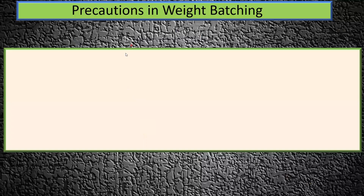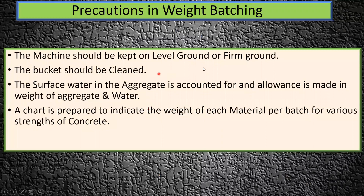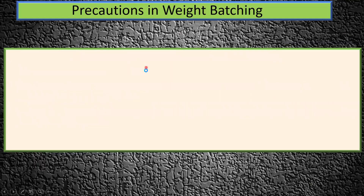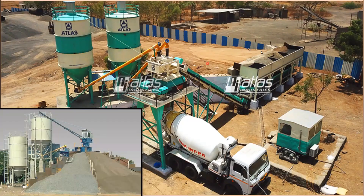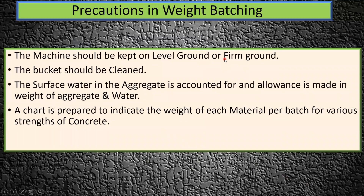Now, what are the precautions to take while doing weight batching? First, the machine should be kept on level or firm ground so that we make proper use of it. Second, the buckets should be clean — regular maintenance has to be done on the buckets used in the batching plant.